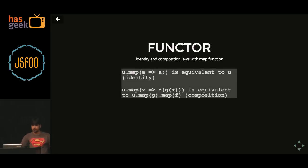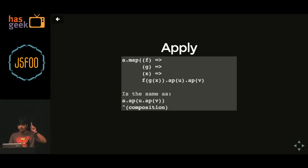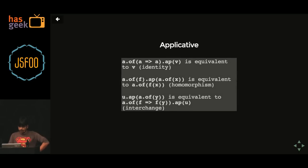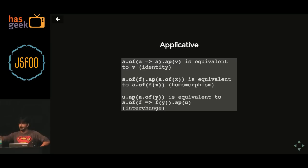Then we have functor — anything that has a map method. Your array itself is a functor. Anything that is mappable is basically a functor — it implements identity and composition. Apply is basically a functor that also implements the AP method and composition. If we have applicative, it has identity, homomorphism, and interchange. Homomorphism: homo means single, morph means to modify, so it operates on only one kind of category and modifies it.